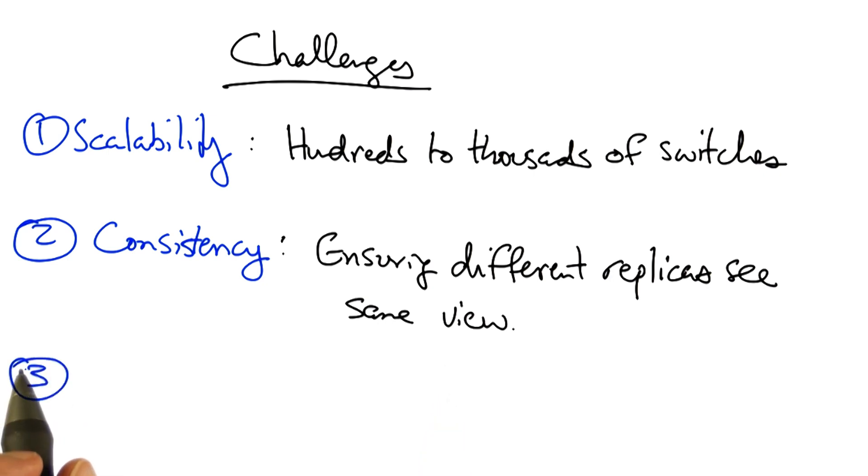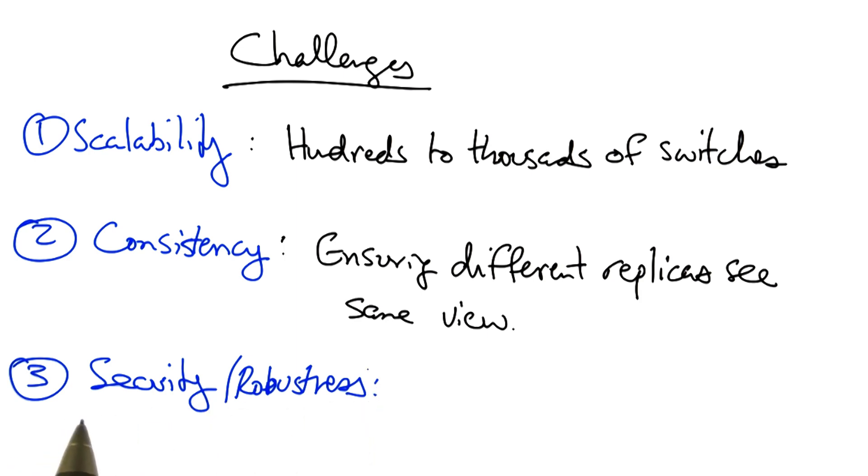A final challenge that's also worth mentioning is security or robustness. In particular, we want to make sure that the network continues to function correctly in the event that a controller replica fails or is compromised.